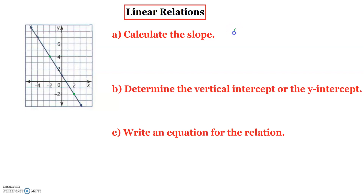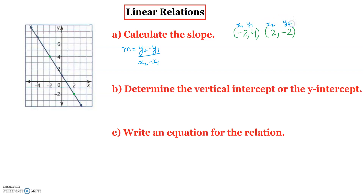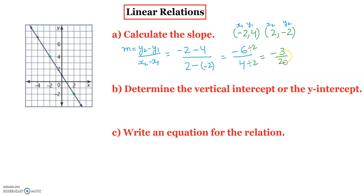The first point is (-2, 4) — we always write the x value first. The second point is (2, -2). We know the slope formula is m = (y2 - y1) / (x2 - x1). So x1 = -2, y1 = 4, x2 = 2, y2 = -2. That gives us (-2 - 4) / (2 - (-2)) = -6 / 4, which reduces to -3/2, which is the slope.